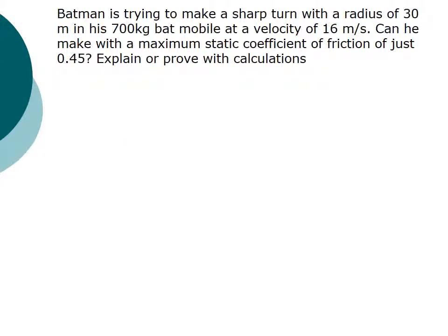In this problem we have Batman driving around a sharp turn of a radius of only 30 meters. If the Batmobile has a mass of 700 kilograms and goes at a velocity of 16 meters per second, the question is, can he make the corner that has a radius of 30 meters when the maximum static friction on the road is only 0.45? And then the question says to explain whatever answer you come up with with your calculations.